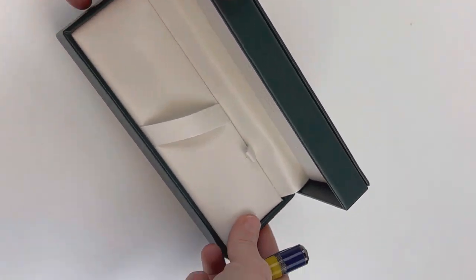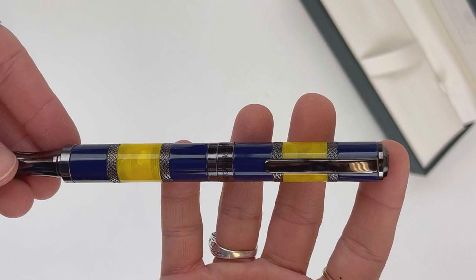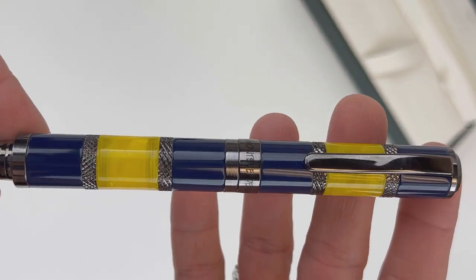You can go ahead and pull it out. Now, the Regatta is a magnetic cap closure, so when you're pulling it out, just keep that in mind. This is a good look at it.